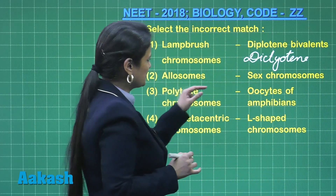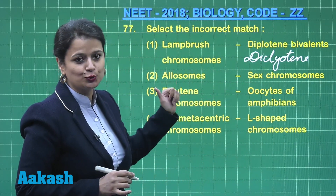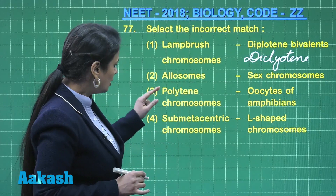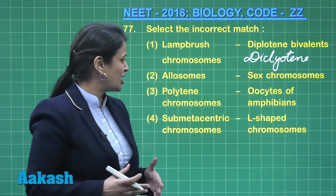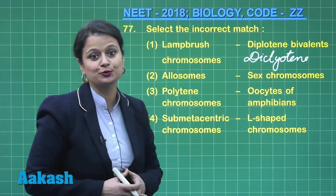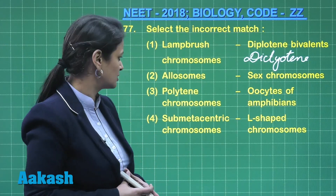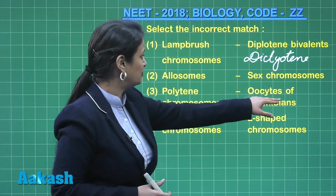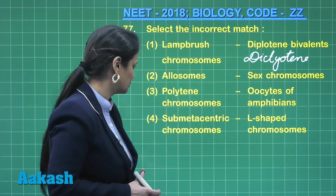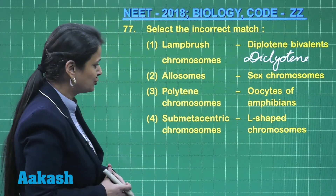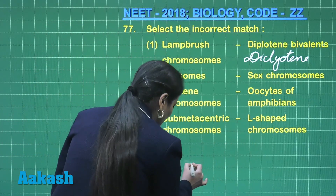Allosomes are known as sex chromosomes, and autosomes are known as somatic chromosomes. Polytene chromosomes are also a category of giant chromosomes, but these giant chromosomes are present in the salivary glands of insects. So oocytes of amphibians have lampbrush chromosomes, not polytene chromosomes.